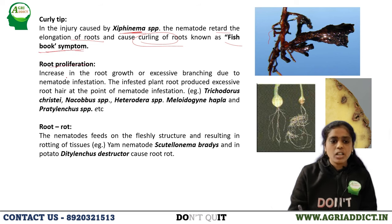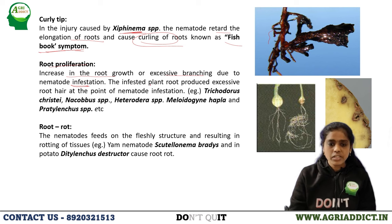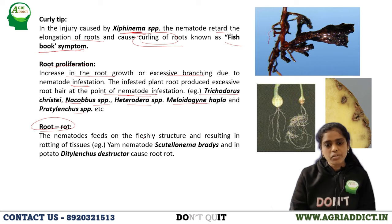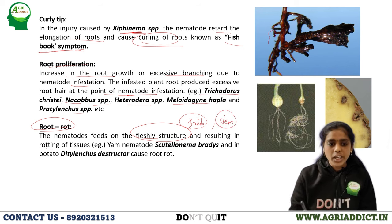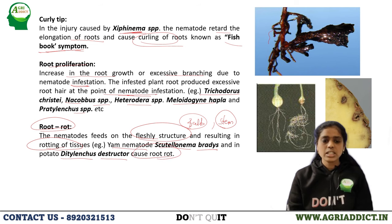Root proliferation involves excessive branching and formation of excessive root hairs at the point of nematode infestation. Examples are Trichodorus christiei, Nacobbus, Heterodera, Meloidogyne hapla, and Pratylenchus. Root rot: as nematodes feed on the fleshy structure of the plant body such as the bulb or stem, it causes rotting of the tissue. Examples are yam nematode, Scutellonema bradys, and in potato, Ditylenchus destructor, which cause root rot.